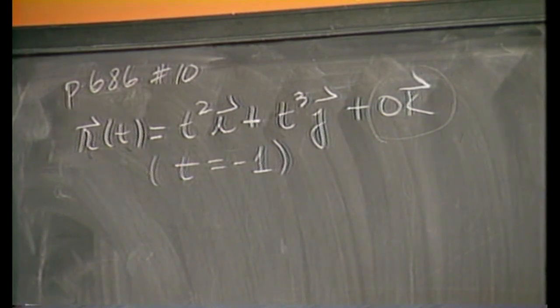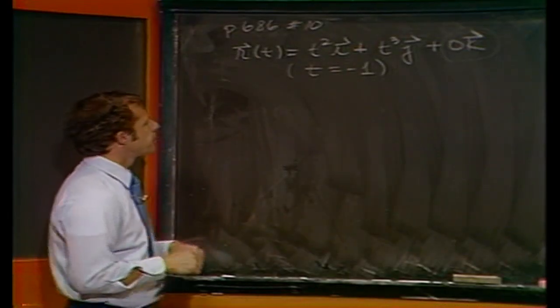In words, what you'll see is that they want us to sketch the path that this corresponds to, two-dimensional, find r prime, and at time t equals minus 1 sketch in the vector r of minus 1 and r prime of minus 1. And if I'm at all lucky today, you will find that they do look to be in the right positions.